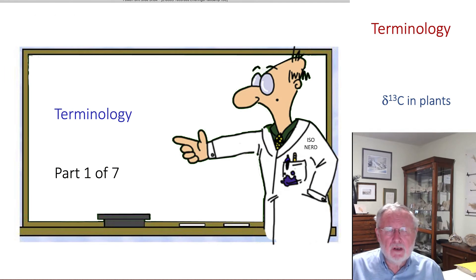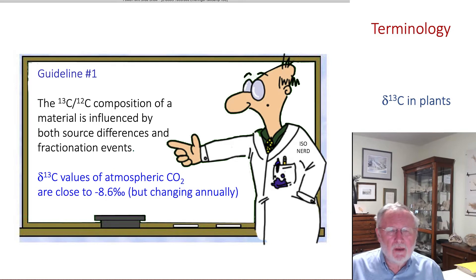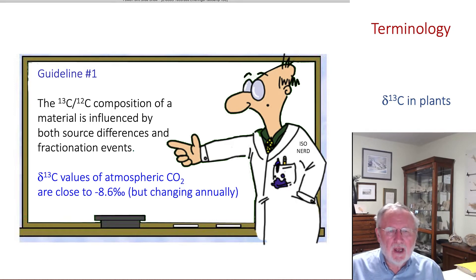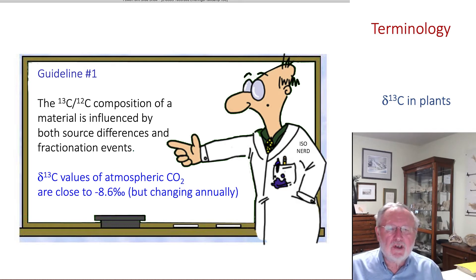Part one: let's talk about terminology. The first guideline is that the 13C/12C composition of a material — in this case a biological material, or specifically a plant material — is influenced by both sources, that is the source of the carbon dioxide used in the photosynthetic process, and fractionation events that occur during the fixation and transformations of carbon within plants.